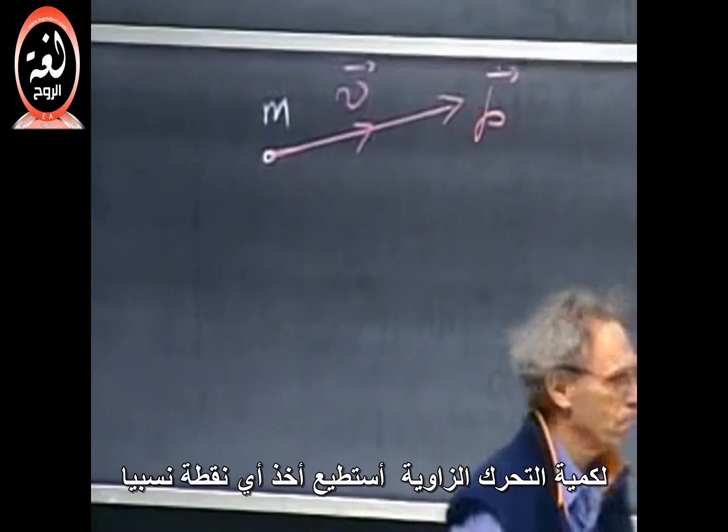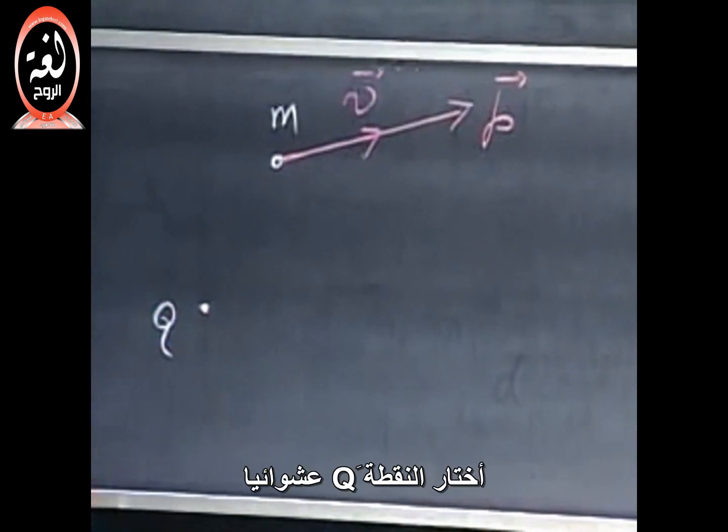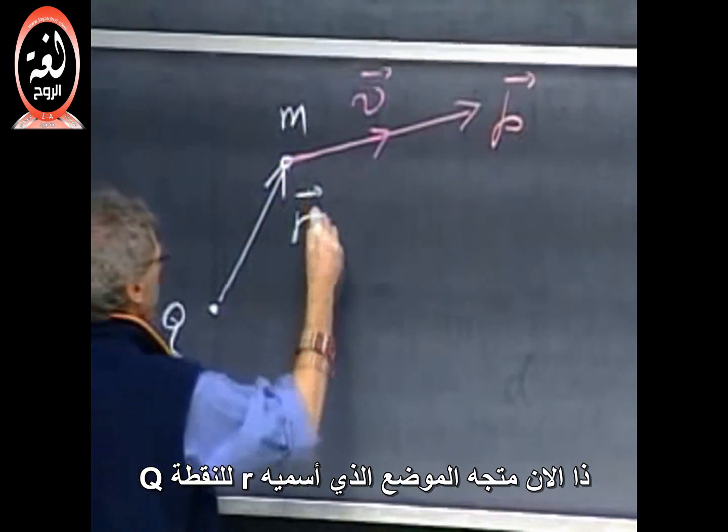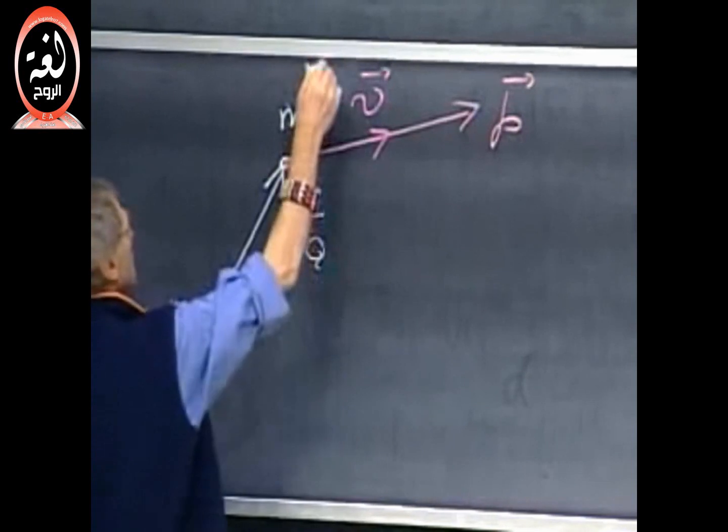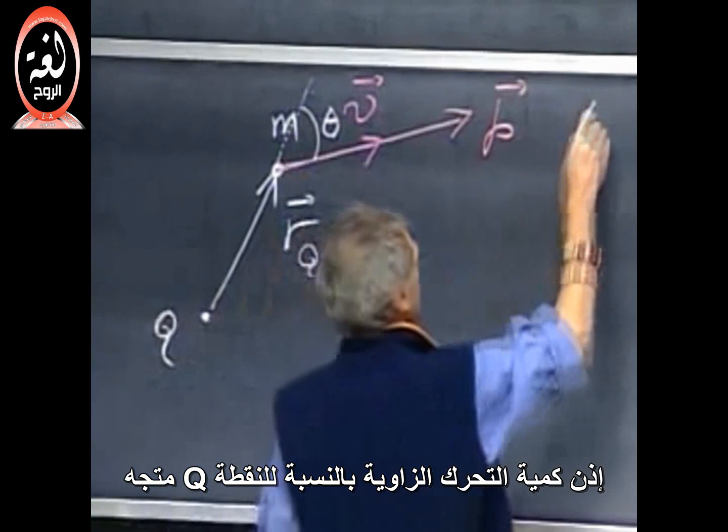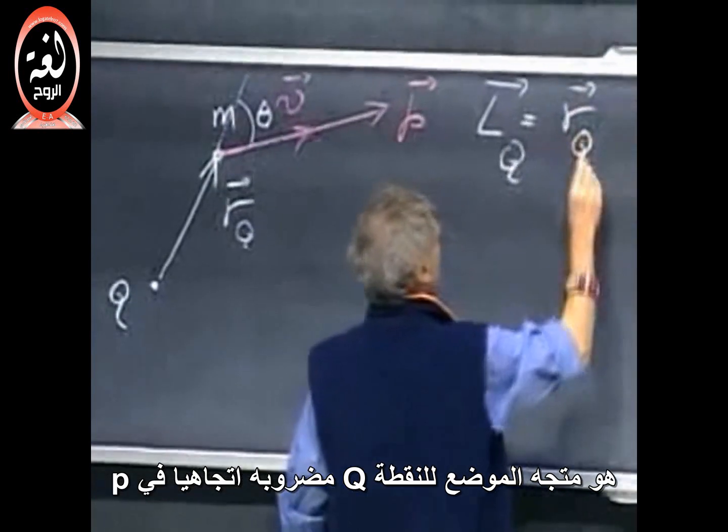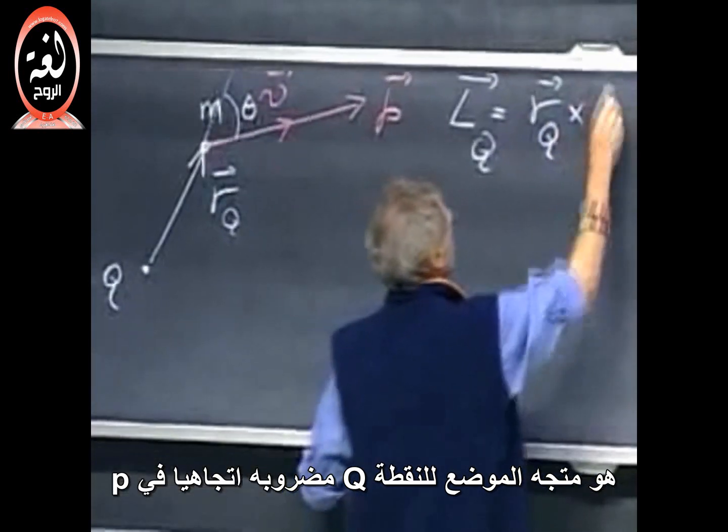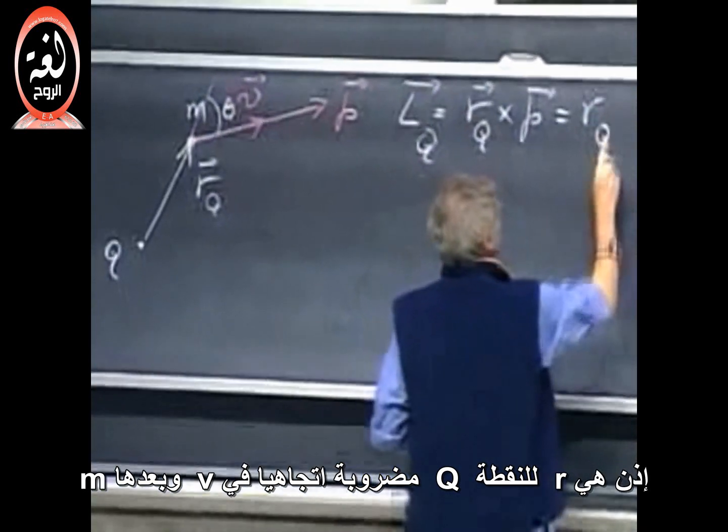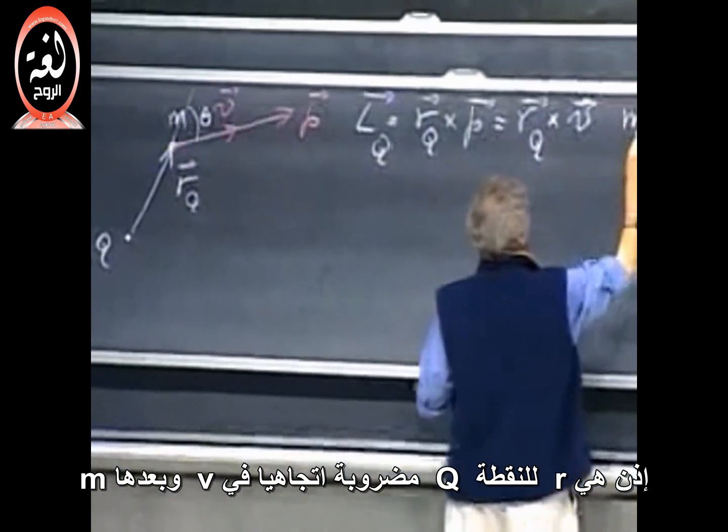Angular momentum, I can take relative to any point I choose. I choose this point Q arbitrarily. This, now, is the position vector, which I call R of Q. Let this angle be theta. Angular momentum relative to that point Q, it's a vector, is the position vector relative to that point Q cross P. So, it is R of Q cross V and then times m.